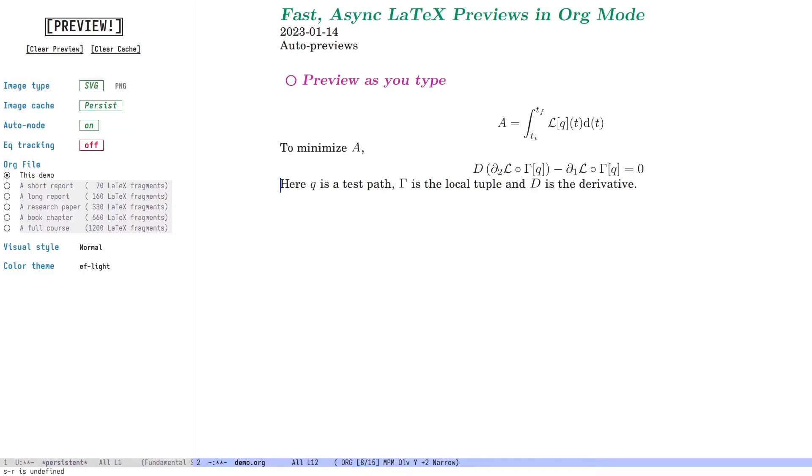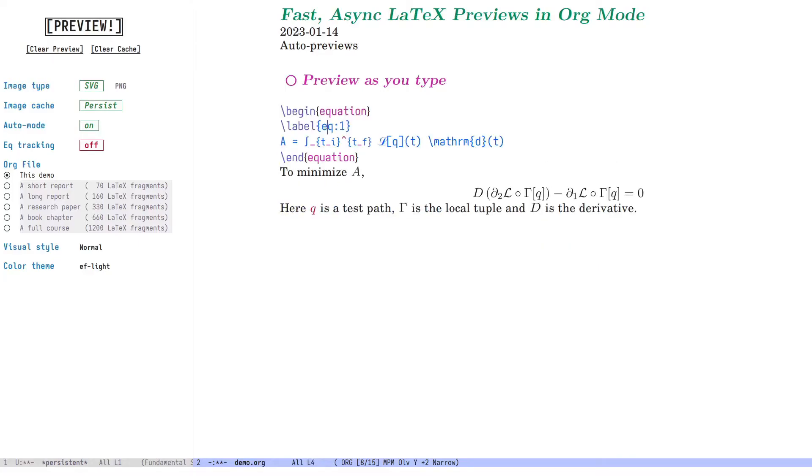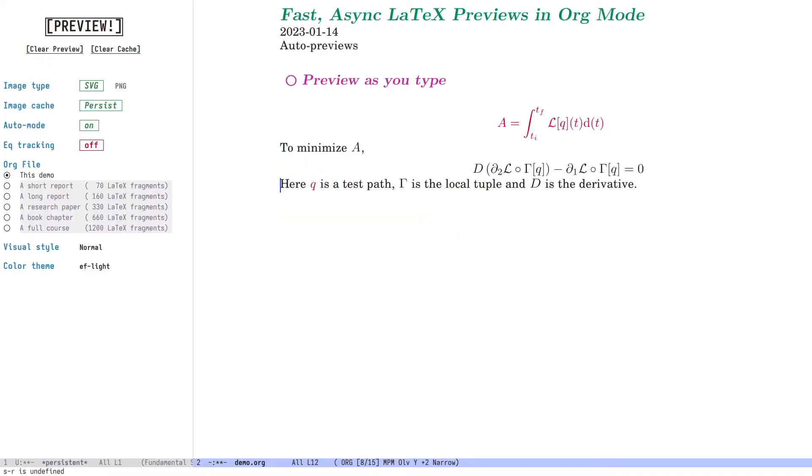This also gives us a good opportunity to show off the new error reporting system. So if for some reason a LaTeX preview does not compile cleanly, then it is displayed differently. In this case, in the error phase in red. These errors are recorded and the plan is to eventually integrate them into a linter and possibly into Flymake. But for now, you can view the error by mousing over the fragment.